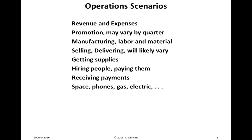The operation scenarios ultimately we convert to revenue and expenses for the Earning Statement. There will be promotion, which may vary by quarter. Manufacturing labor and material — these are the variable costs. Selling and delivery will likely vary along with the labor and material costs.